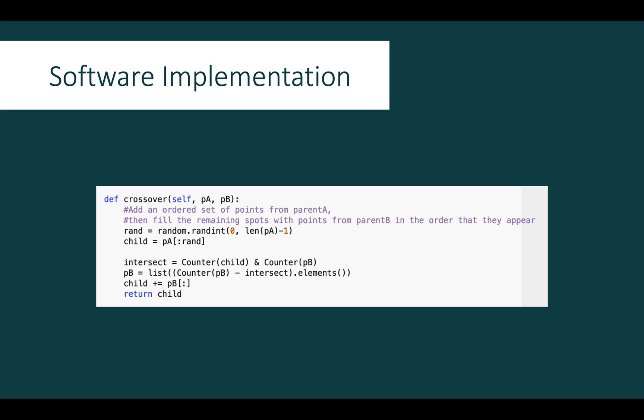The crossover function for generating the child element operates by selecting a random integer n between 0 and the number of cities. The first n elements from the first parent are added to the child to define the start of the path. The remaining path elements are then inserted from the second parent in the order that they appear, ignoring any elements already inserted from the first parent. This results in the child having the correct number of unique cities in the order which takes on characteristics from both parents.